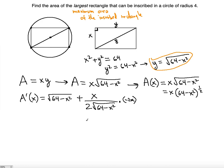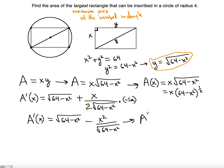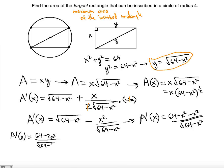To simplify, combining into a single fraction with LCD of square root of 64 minus x squared: the numerator becomes (64 minus x squared) minus x squared, and everything is over the square root of 64 minus x squared. Simplifying further, the derivative equals 64 minus 2x squared, all over the square root of 64 minus x squared.